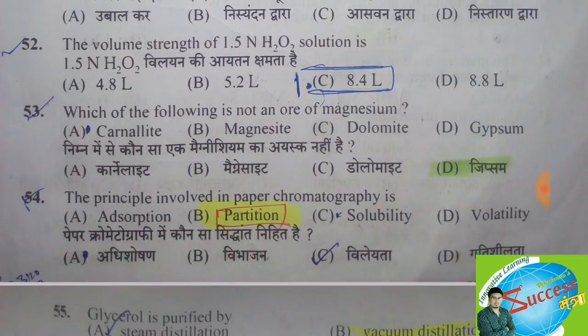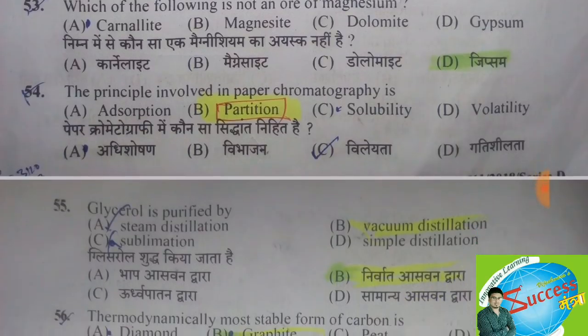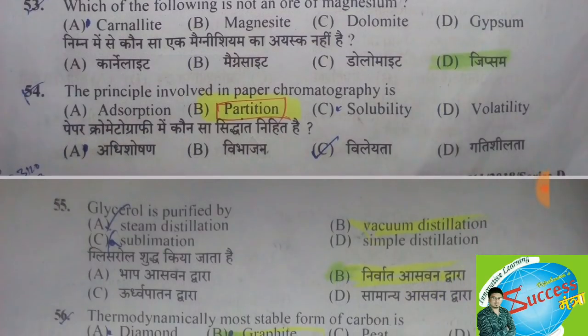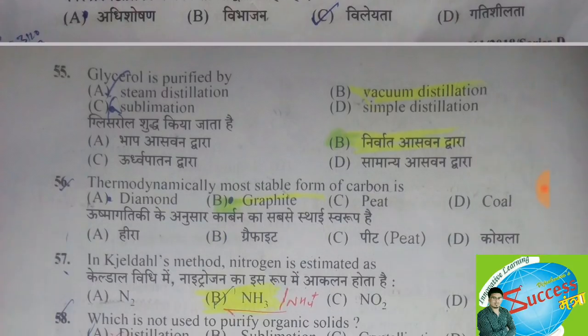Which of the following is not an ore of magnesium? The correct answer is option D, gypsum. Carnallite, magnesite, and dolomite are all ores of magnesium. Paper chromatography involves the principle of — the correct answer is option B, partition.